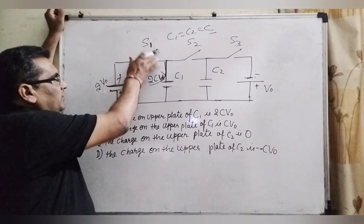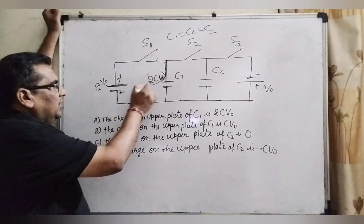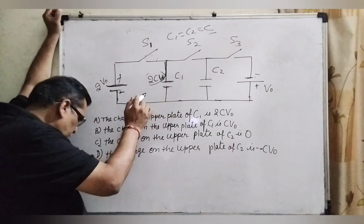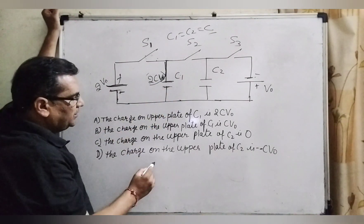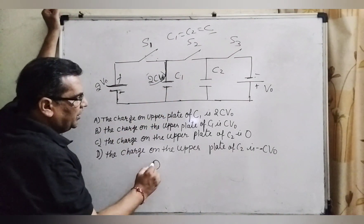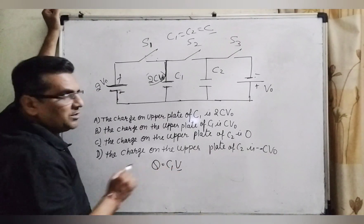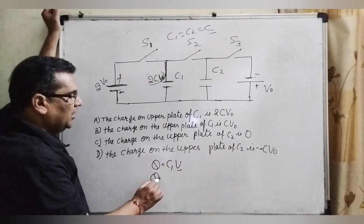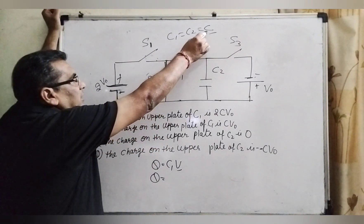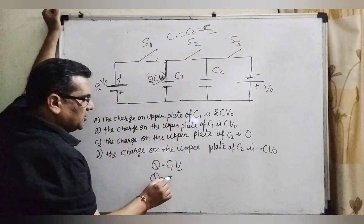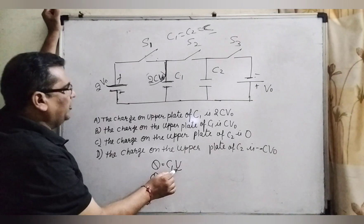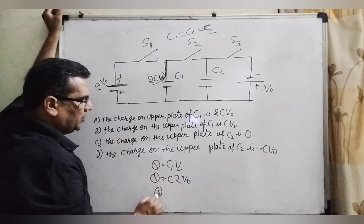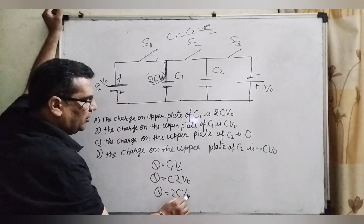Let us first consider when S1 is pressed. Then capacitor C1 gets charged. The charge Q equals C1 times V, where V is the potential and C1 is the capacitor. Since C1 and C2 are both equal to C, and the potential given is 2V0, the total charge becomes 2CV0.